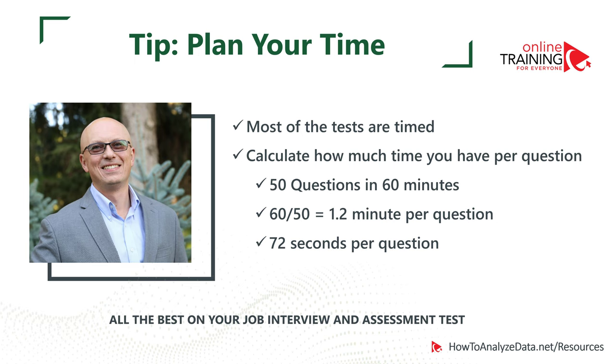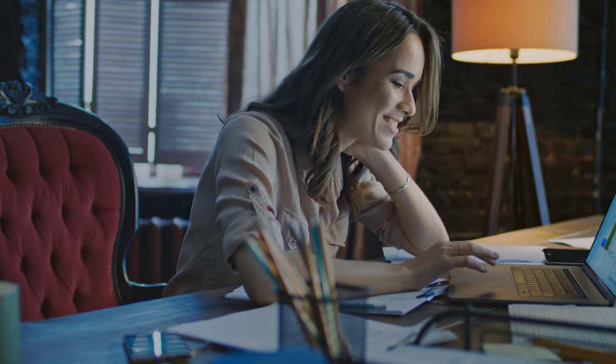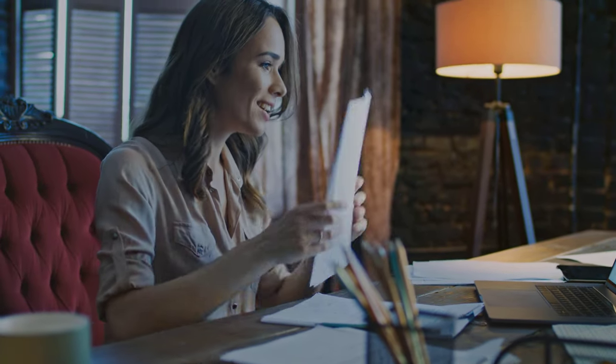Here's a tip on how to plan your time during the test. Most assessment tests are timed. Calculate how much time you have per question. For example, if you have 50 questions in 60 minutes, dividing 60 by 50 gives about 1.2 minutes, or 72 seconds per question. Having this information handy tells you how much time to allocate per question.